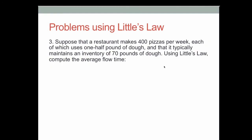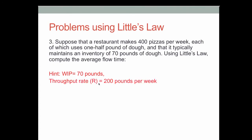The third question is asking us to use Little's Law to compute the average flow time. Here is a hint: work in process inventory is 70 pounds. The throughput rate is 200 pounds per week — because each pizza is 1.5 pounds, so 400 pizzas gives 200 pounds per week.